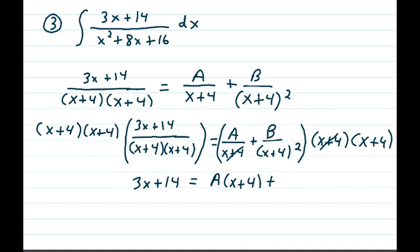From here on out, it's the same as all the rest. We multiply both sides by the common denominator of x plus 4, x plus 4. Of course, on the left, the entire denominator disappears and you get 3x plus 14.